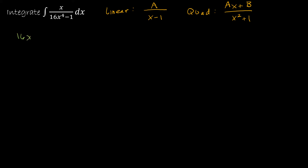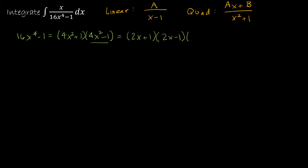I'll start with 16x to the fourth minus 1 and factor it. Using the difference of perfect squares pattern, I can rewrite this as (4x² + 1)(4x² − 1). Now 4x² + 1 will not reduce further, but 4x² − 1 is still a difference of perfect squares, so that factors into (2x + 1)(2x − 1). So our quadratic factor is 4x² + 1.